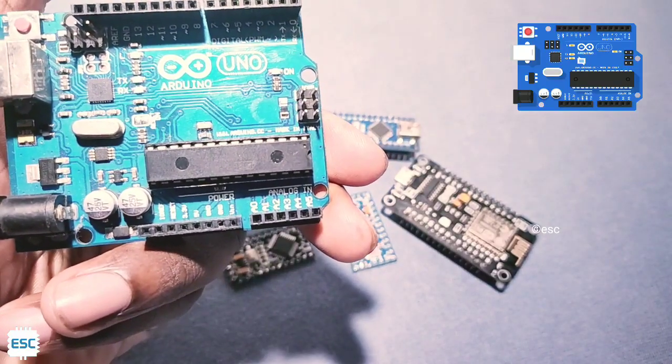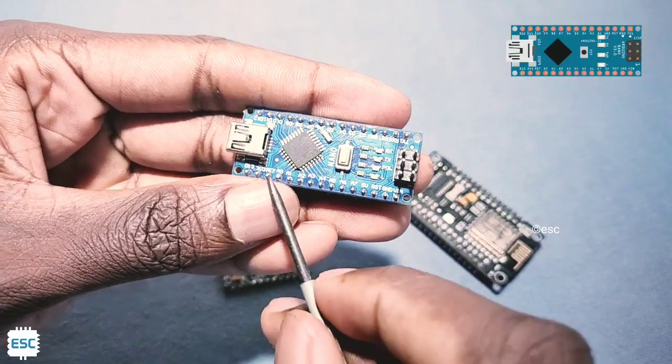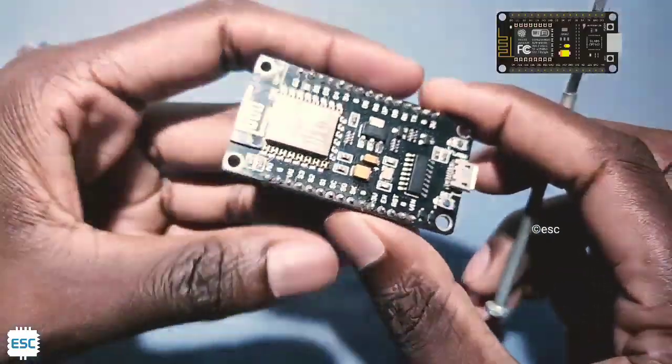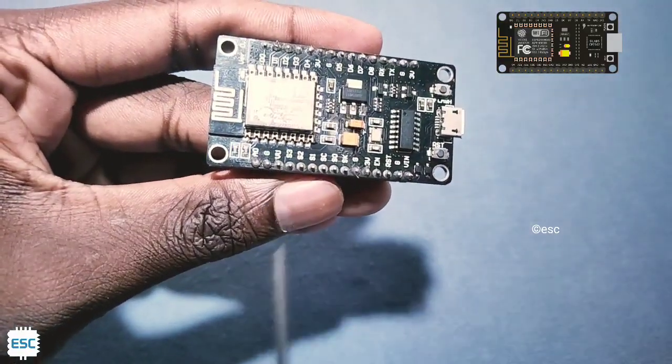This Arduino Uno has 6 analog inputs, this Pro Mini has 6 analog inputs, and Nano has 8 inputs. Unlike other boards, this ESP8266 NodeMCU has only 1 analog input.